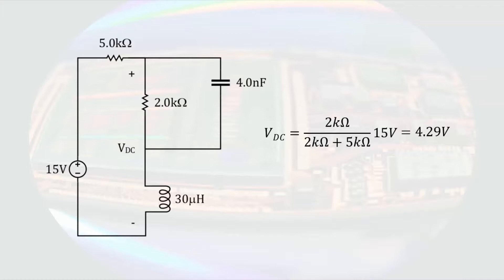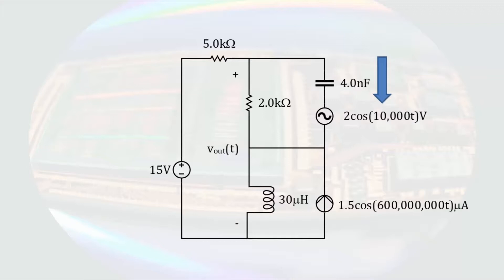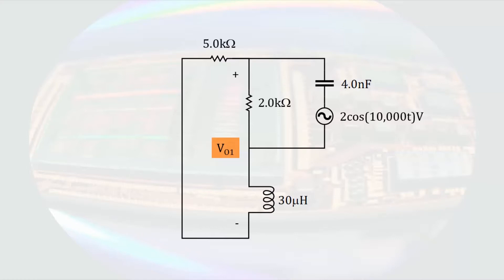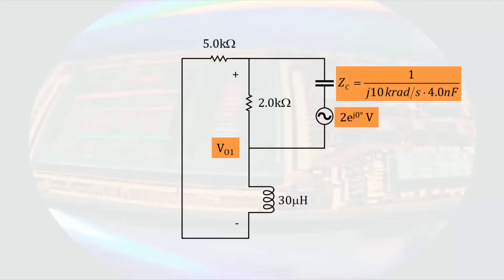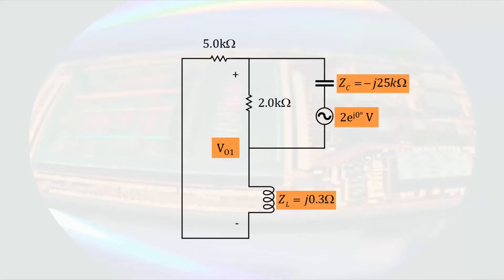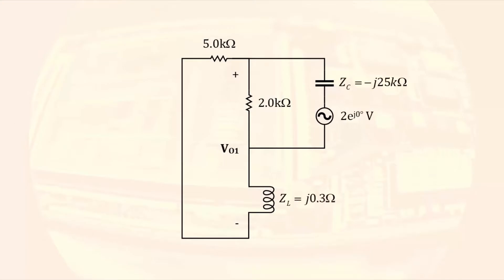Going back to the original circuit, we analyze the contribution of the sinusoidal voltage source. We turn off the DC voltage source by replacing it with a wire and turn off the AC current source by replacing it with an open circuit. Now we have a circuit with a single frequency sinusoidal source, so we can move to the phasor domain. The voltage source phasor has no phase angle, so it is represented as the magnitude times e to the j0 degrees. The impedance of the capacitor is 1/jωC, giving -j25 kilohms. The impedance of the inductor is jωL, giving j0.3 ohms. With the circuit in the phasor domain, we can determine the phasor voltage V01.